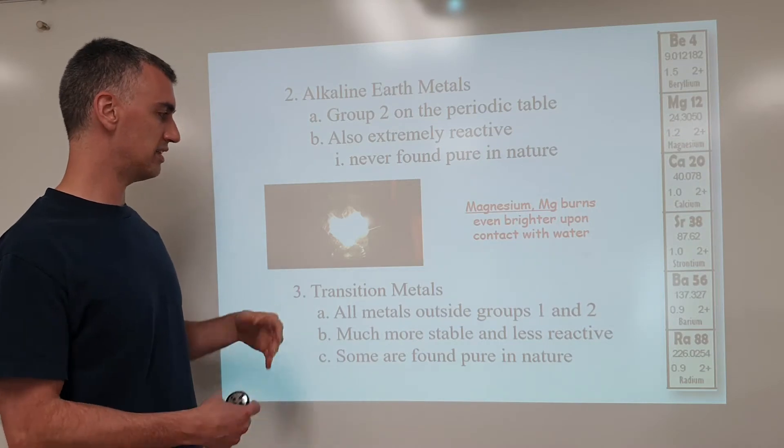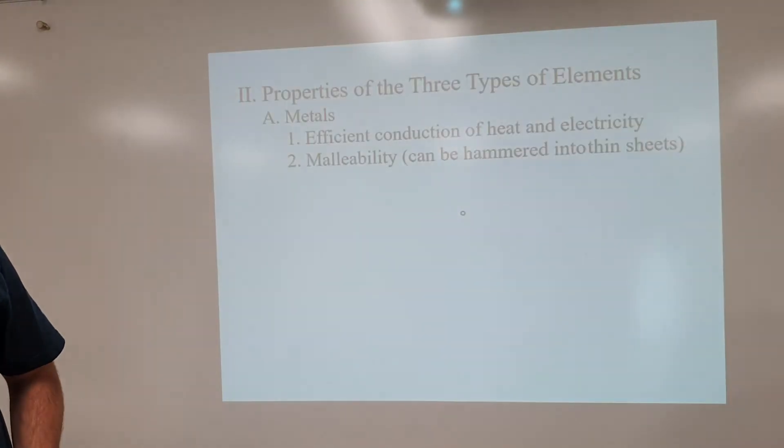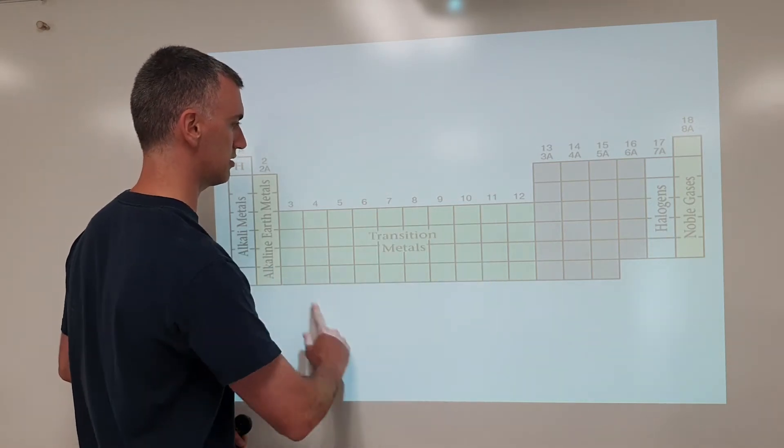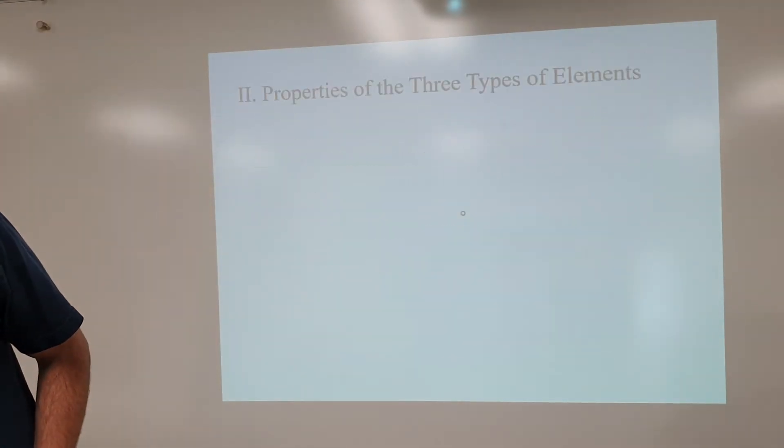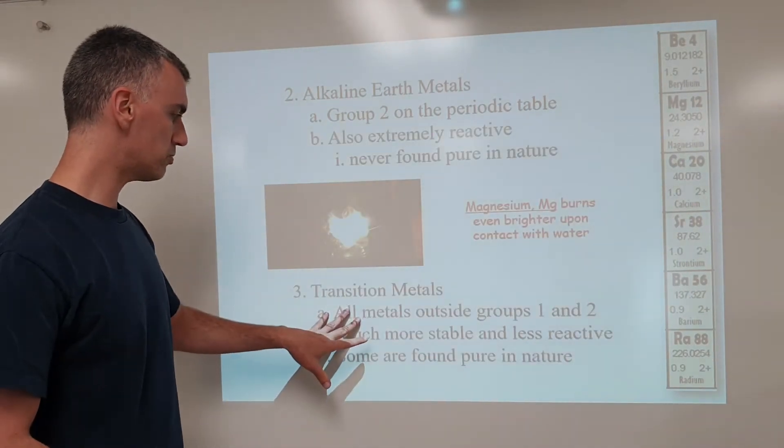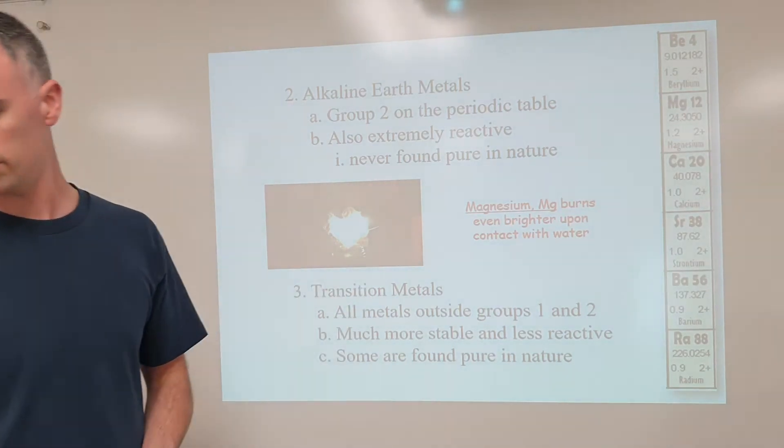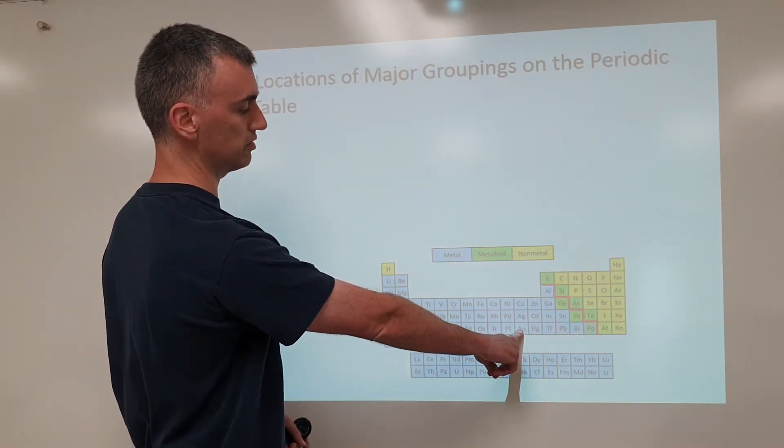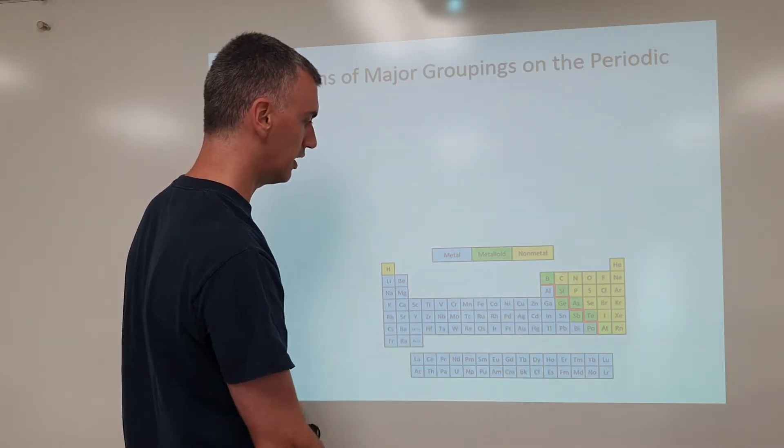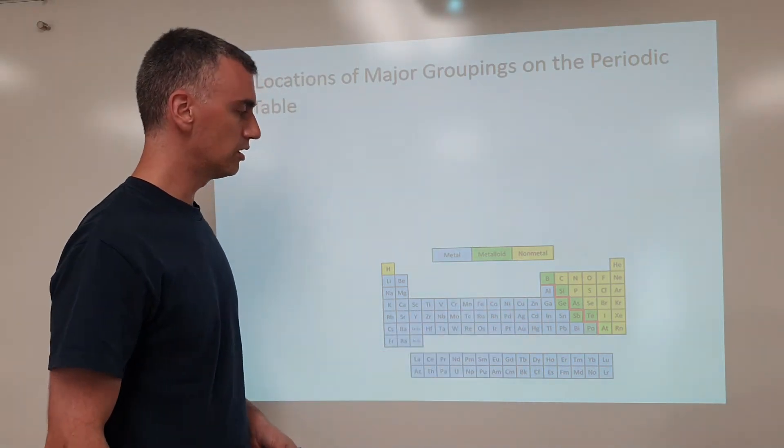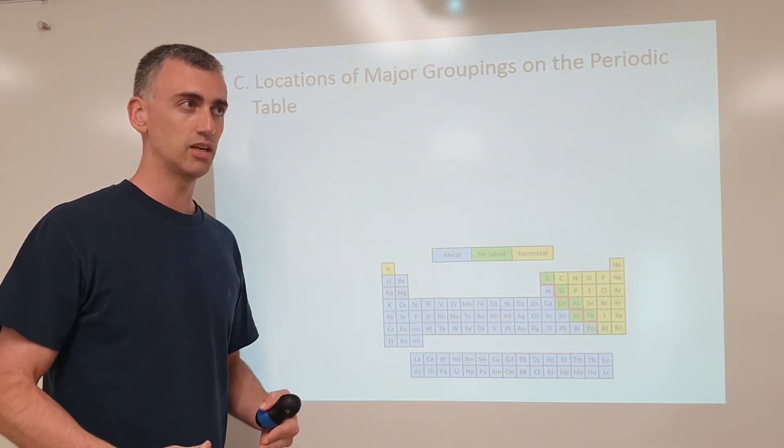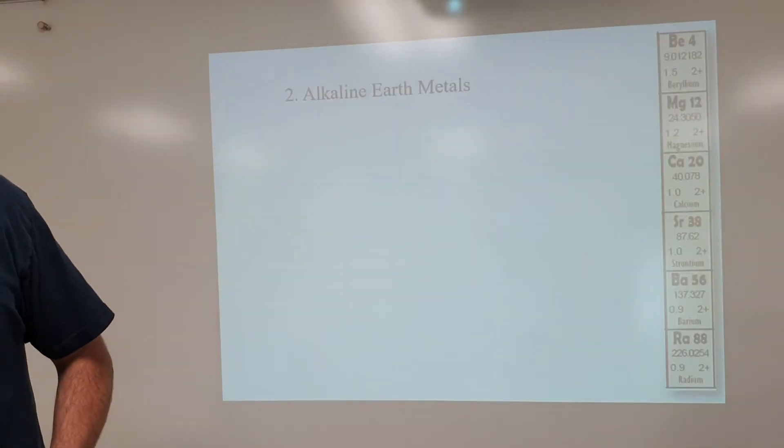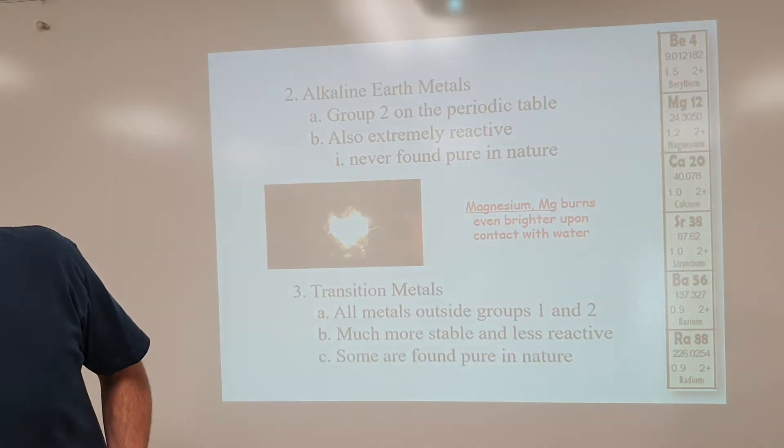Transition metals is a whole big group of metals in the middle, much less reactive. This is the transition metals. Much less reactive, some are found pure in nature. One of the metals that you can find pure in nature is gold, is one of the transition metals. You can find nuggets of it pure in nature. Same for silver, same for copper, and some of these other ones will occasionally pop up too. It's because of low reactivity that those atoms will sit around, not reacting to make compounds, that you can still find it pure, even millions of years later.